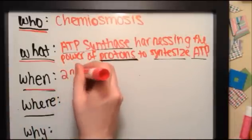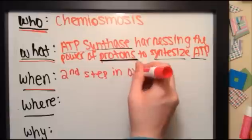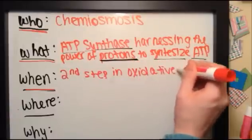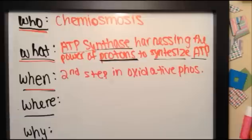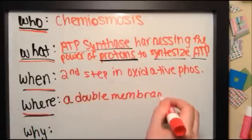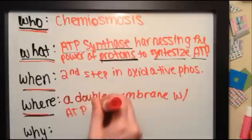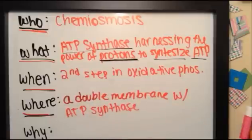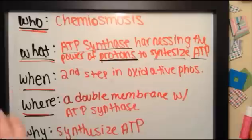Now when exactly does it occur? Chemiosmosis is the second step in oxidative phosphorylation. That's part of respiration. It can happen anywhere with ATP synthase embedded in a double membrane. Now the whole purpose is to synthesize ATP to drive cellular work.